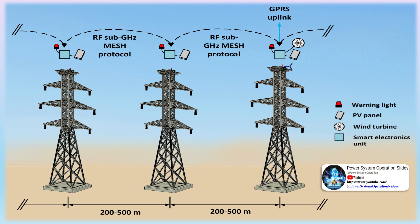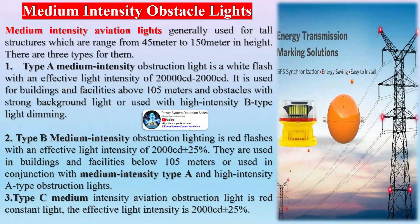Aviation obstruction lights are special lamps that identify obstacles. Their main function is to display and outline the silhouette of a building so that aircraft operators can judge the height and outline of the obstacle and receive a warning.